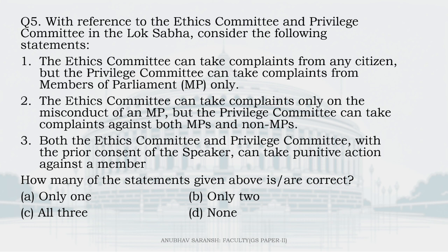And the last question for today: With reference to the Ethics Committee and the Privilege Committee in the Lok Sabha, consider the following statements. Statement one: The Ethics Committee can take complaints from any citizen, but the Privilege Committee can take complaints from members of Parliament only. This is absolutely correct. Statement two: The Ethics Committee can take complaints only on the misconduct of an MP, but the Privilege Committee can take complaints against both MPs and non-MPs — yes, even outsiders who try to breach the privilege of the house. So, statement two is correct.